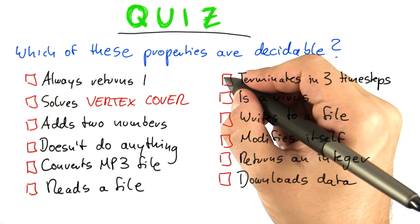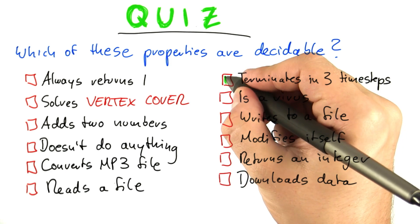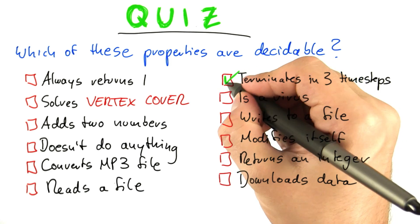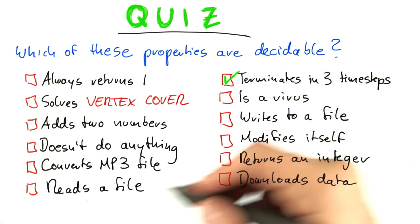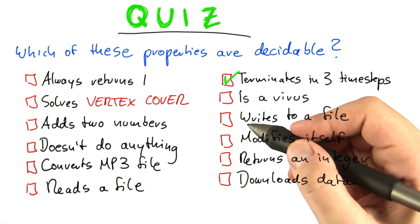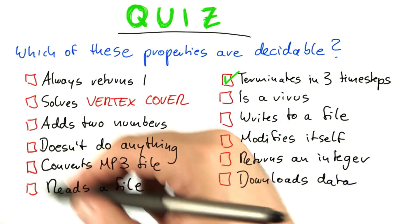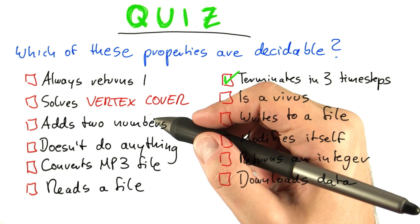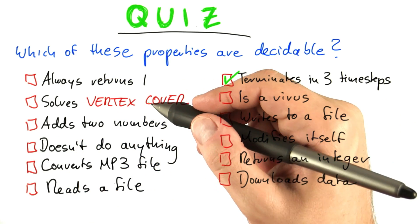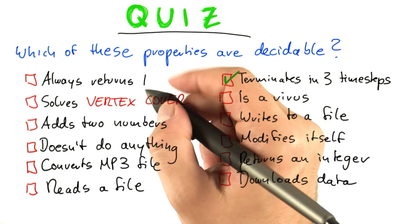There's actually only a single decidable property here. All of the other properties are undecidable. Let's go quickly through them one by one to discuss why that is.